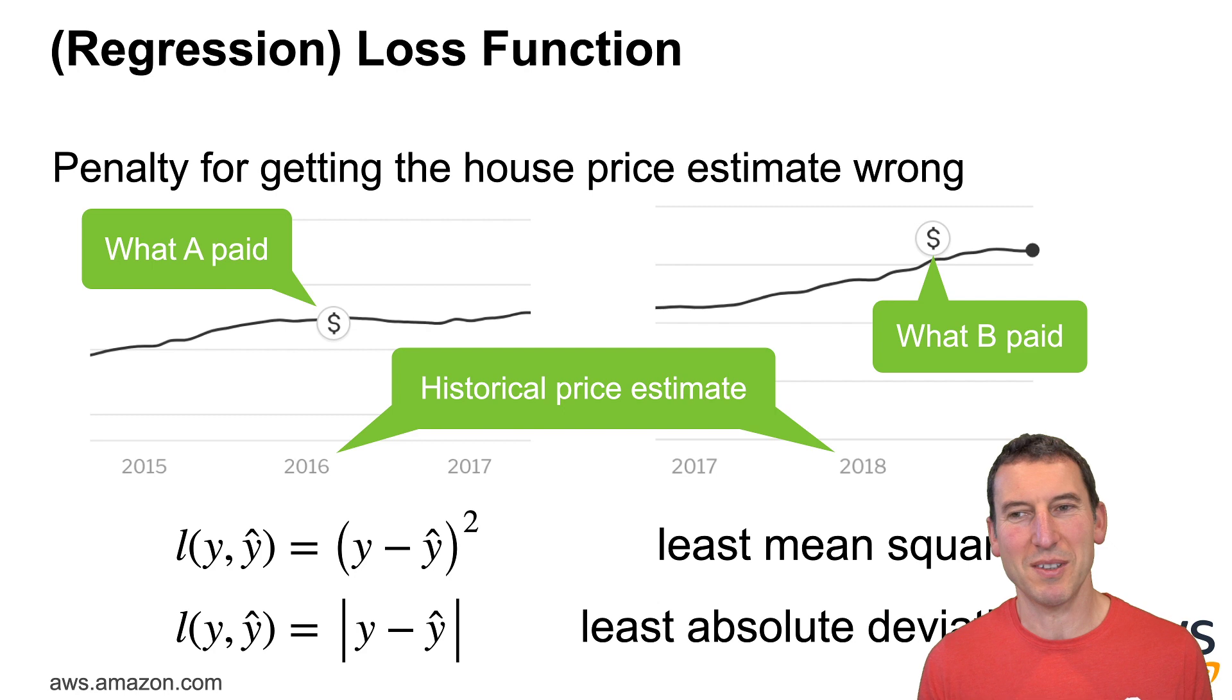Since it's going to be a difference between dollars you paid and dollars you should have paid, maybe the actual difference as opposed to difference squared is more what matters to your bank account. So maybe the absolute value between y and y hat would be more suitable, but this really depends on the problem that you're trying to solve.